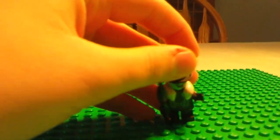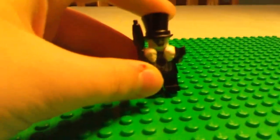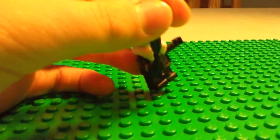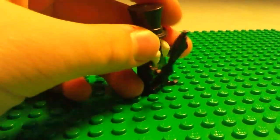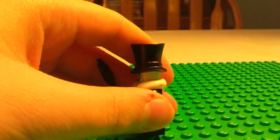Now I'm showing you Penguin from this set. As you can see, he comes with this new umbrella piece mold and the new hat mold.